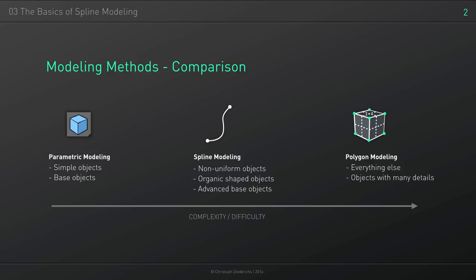With parametric modeling it's pretty simple — you can just add block after block or object after object. When we come to spline modeling we can create more advanced objects, but it's still not that difficult. But when we go to polygon modeling, where we can create everything we want, it gets a little bit more complex and you need a bit more experience to achieve your goals.